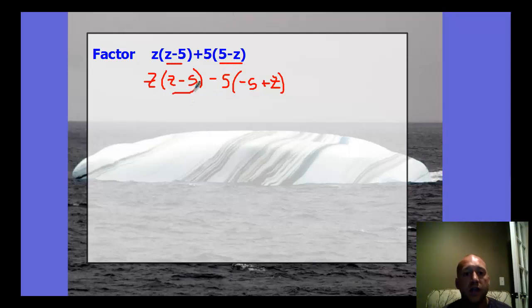Now these are actually the same quantities. The order is different, but they're the same group. So if I factor that Z minus 5 out, I'm left with Z minus 5, which I could say is Z minus 5 quantity squared.